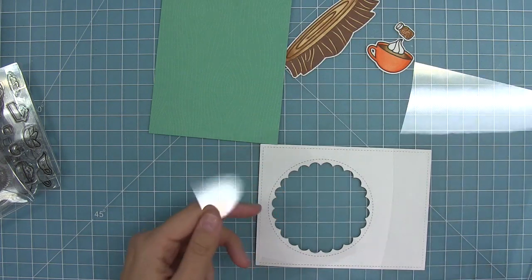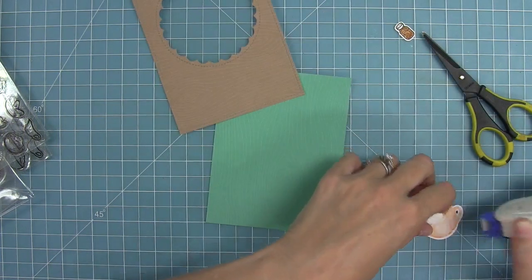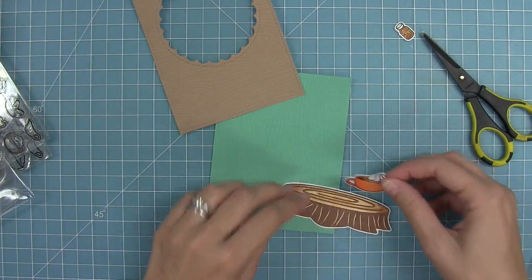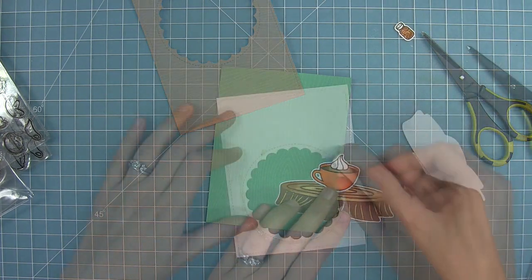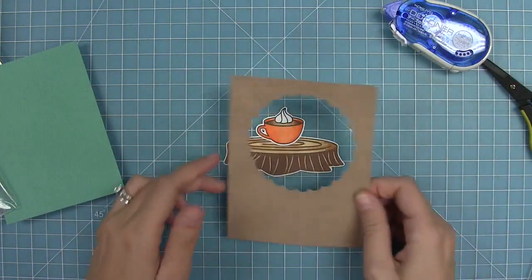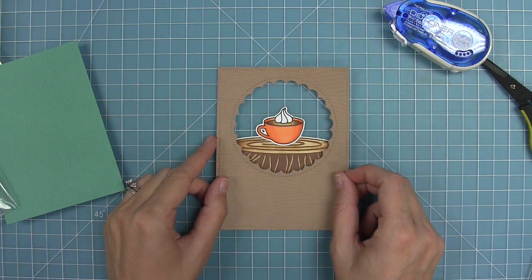I'm going to cut a piece of acetate from my shaker window and then start to layer everything. So I'm going to add my little latte there on top of the stump and then I'm going to add some adhesive to the back of my window and layer that right there to that window.